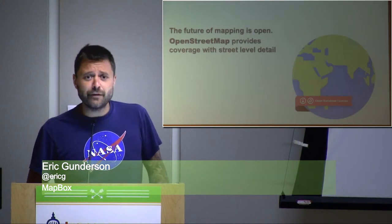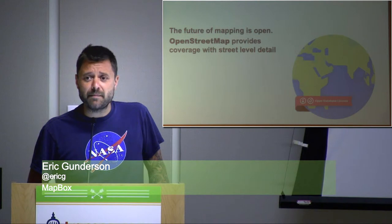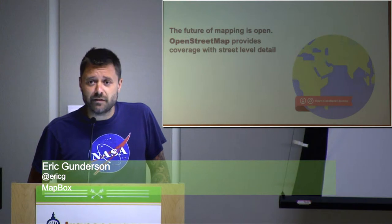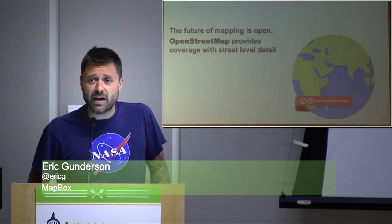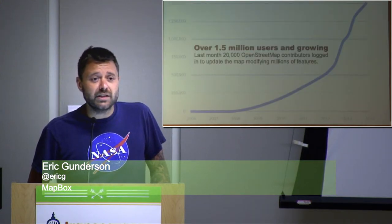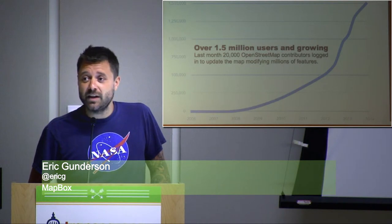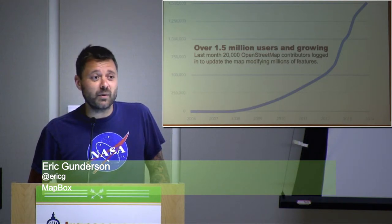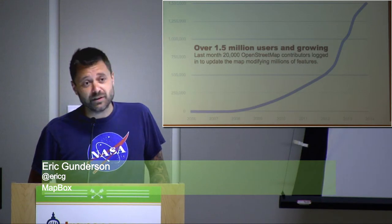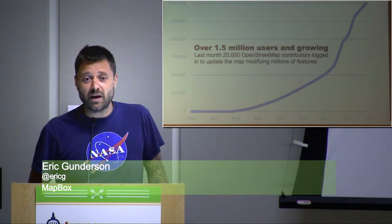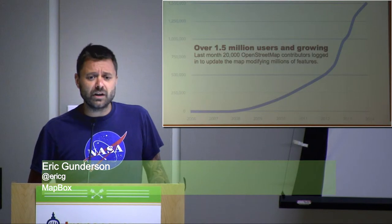So first, we work with OpenStreetMap. This is a community of folks that's often described as the Wikipedia of maps. What's really interesting here is this number: 1.5 million community members. Last month, 20,000 people added data to this map. People on the ground knowing what's important to map in their own neighborhood. This is incredibly powerful. And all those maps you just saw were powered by labels of OpenStreetMap. What's the name of the town? What's the name of the road?